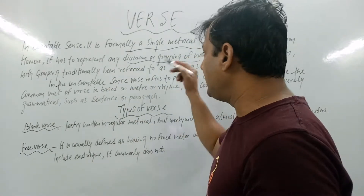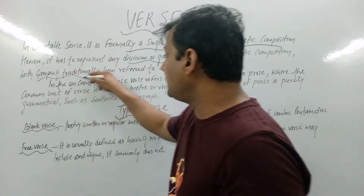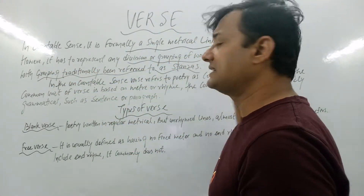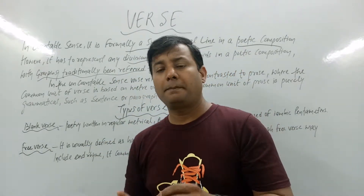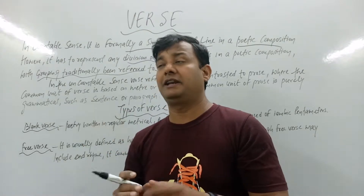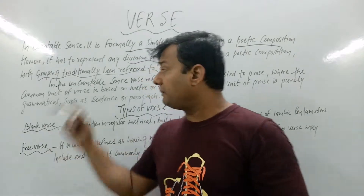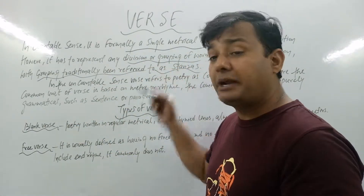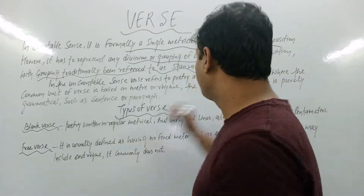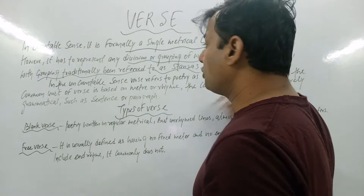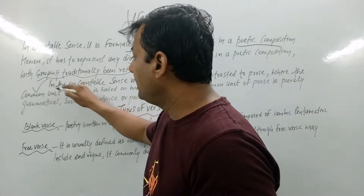In a countable sense, verse has to represent any division or grouping of verse in a poetic composition. This grouping has traditionally been referred to as a stanza. We will go into a separate video on stanza very soon. So verse can be countable and uncountable — and in the countable sense it represents the grouping of verse in a certain poetic composition, with that grouping traditionally referred to as a stanza.